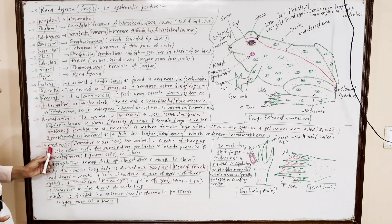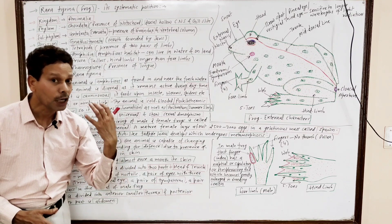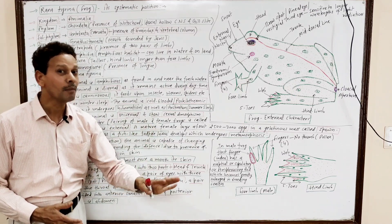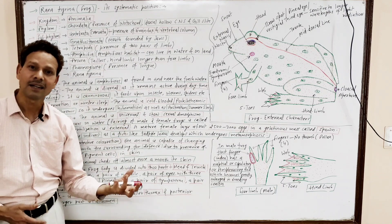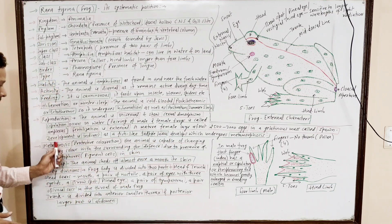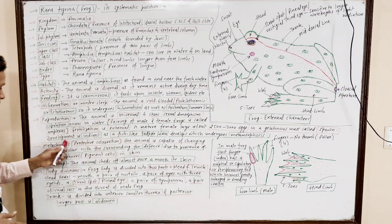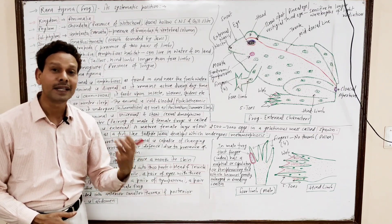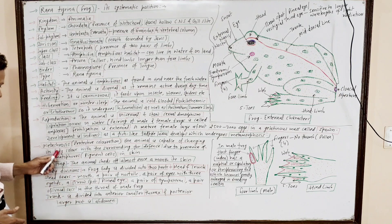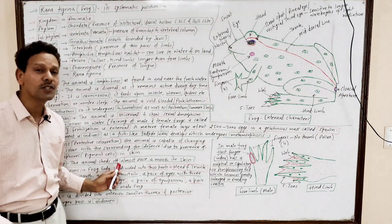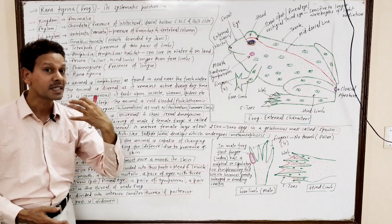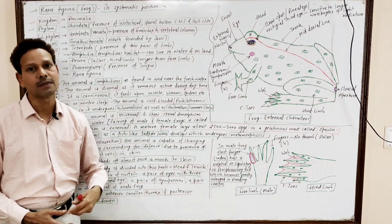Very important point: metachrosis — protective coloration. It means the animal is capable of changing its skin color. Moulting: the animal sheds off its skin almost once a month during its active and breeding season.